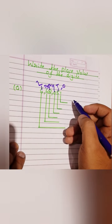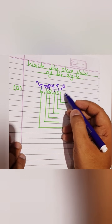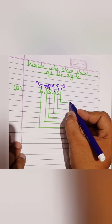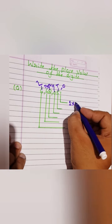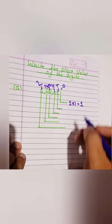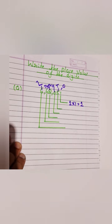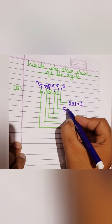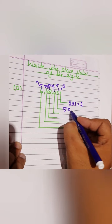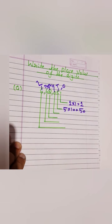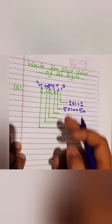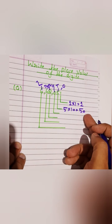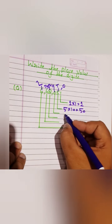One से start करते हैं. One ones में है, तो one की place value one होगी — one का multiply ones में करेंगे तो one ही आएगा. One ones are one. Next, five की place value tens में है. Five का multiply अगर हम ten में करते हैं तो five tens जा 50. Five की place value 50 है.